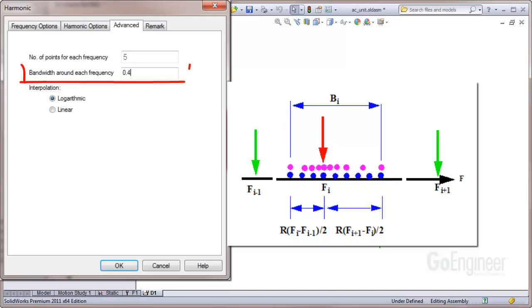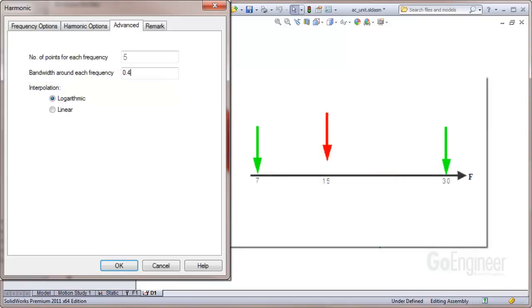The software defaults to using 40% of this value on each side of the center frequency for the option labeled as bandwidth around each frequency. For example, suppose a low frequency is 7 Hz and the center frequency is 15 Hz. The next highest frequency is 30 Hz. We calculate 40% of the bandwidth on the high side. This is 40% of 30 minus 15 divided by 2, or 3 Hz.